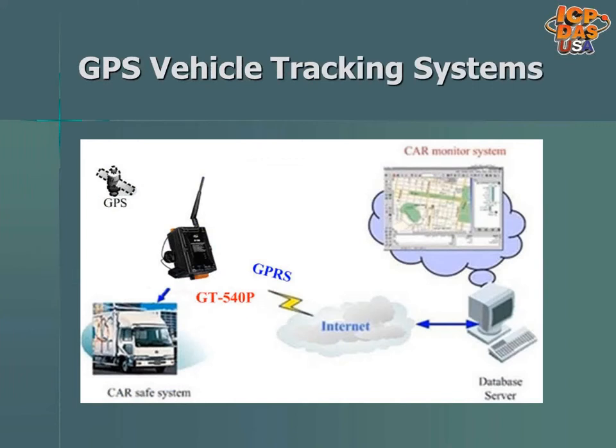GT540P is a GPRS data server with a GPS function and is being used for GPS vehicle tracking systems. You can configure the system to show the location on a PC over the internet with SCADA or custom software. 2G and 3G versions are available.